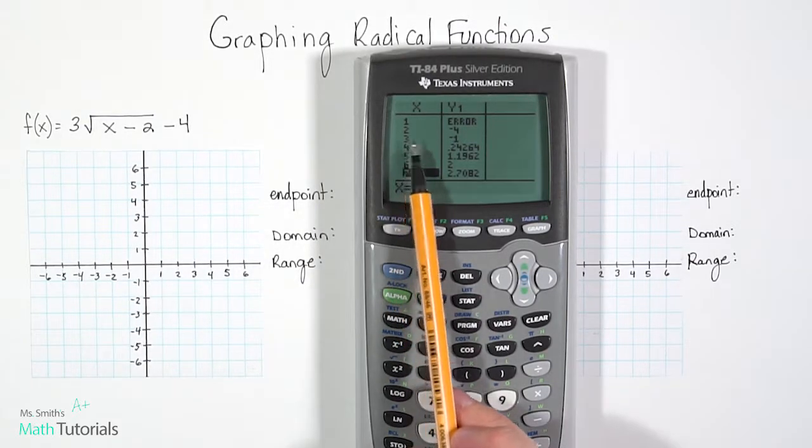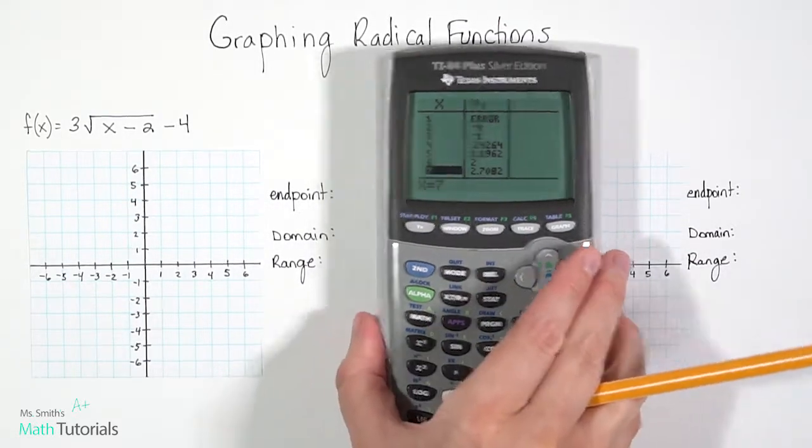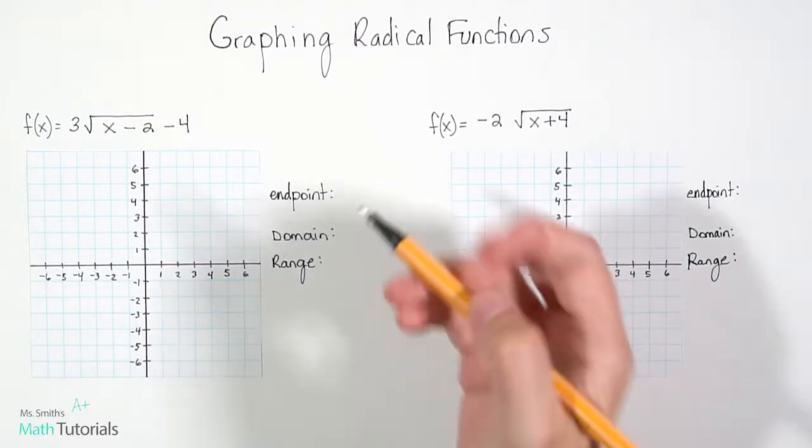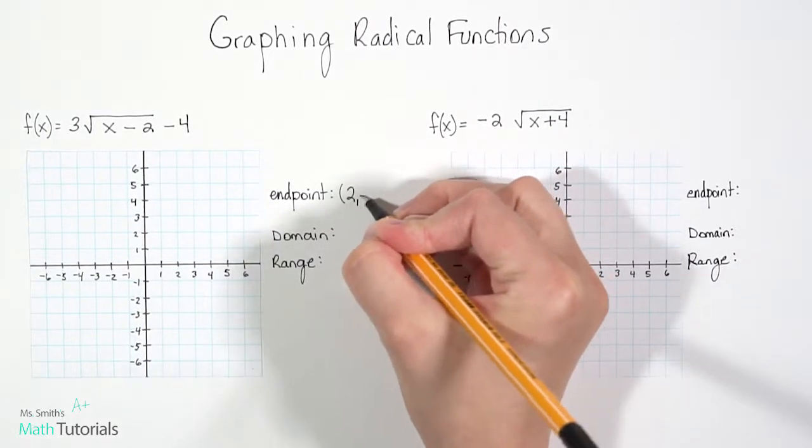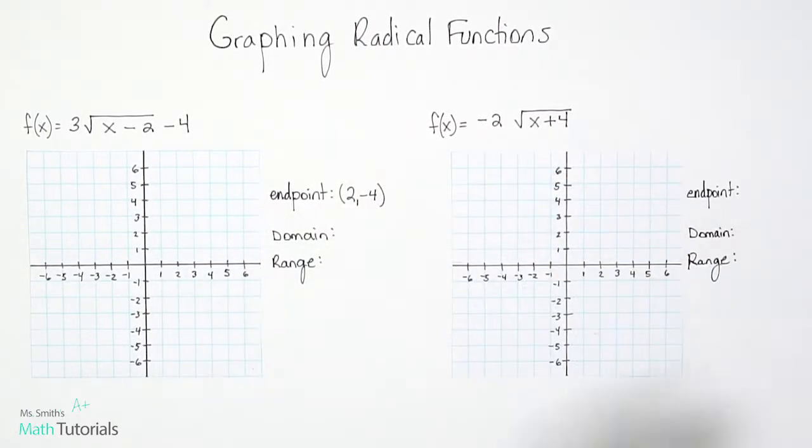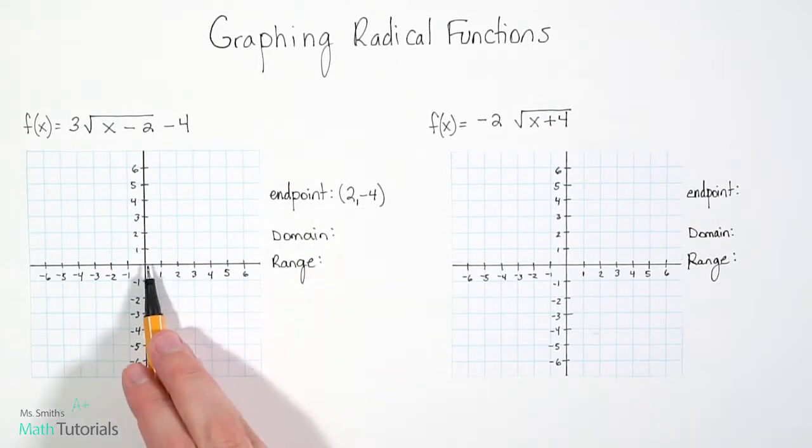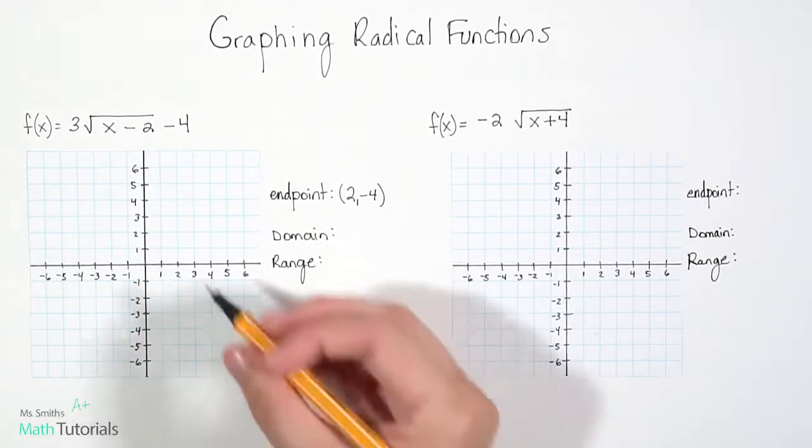So in this case, it's 2, negative 4. So that's going to be our endpoint. So now that we know our endpoint, we can go ahead and plot that. So 2 and then negative 4.